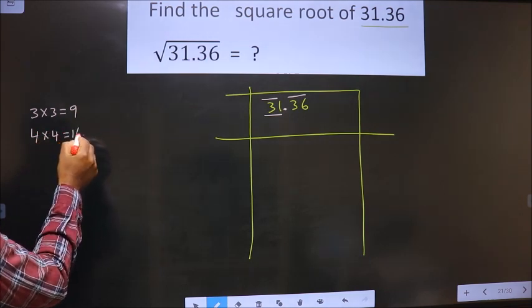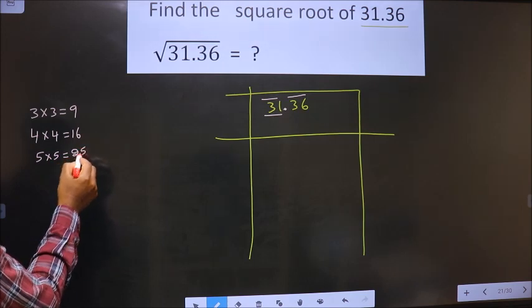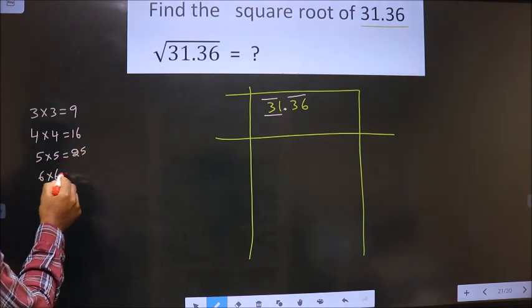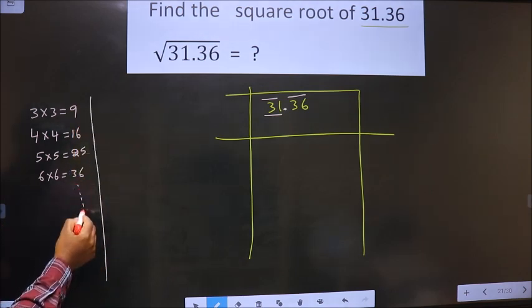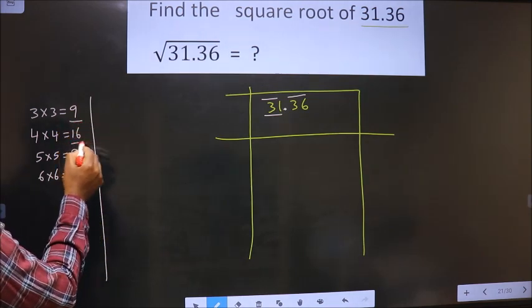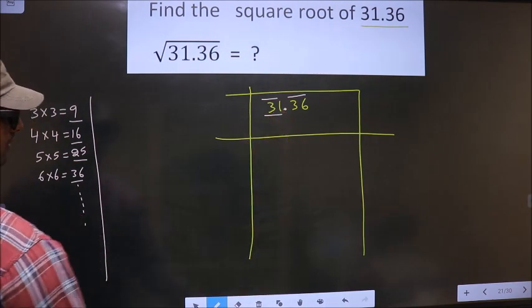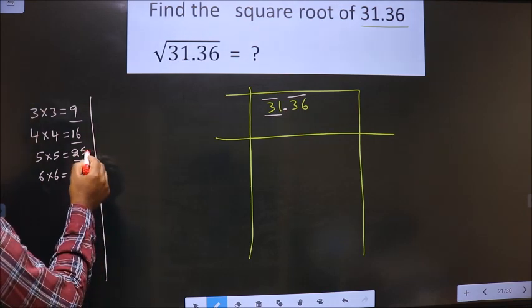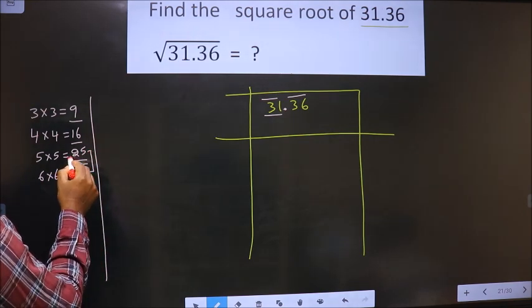5 into 5 is 25, 6 into 6 is 36, and so on. These numbers are called perfect square numbers. Here we have 31, which lies between these two numbers, so we should take the smaller number, that is 25.